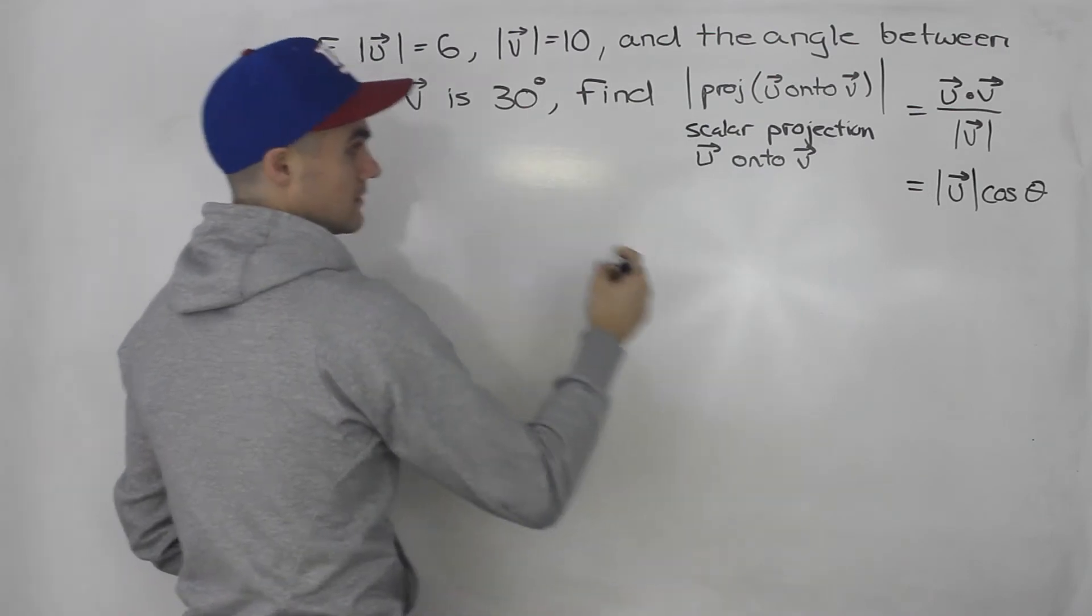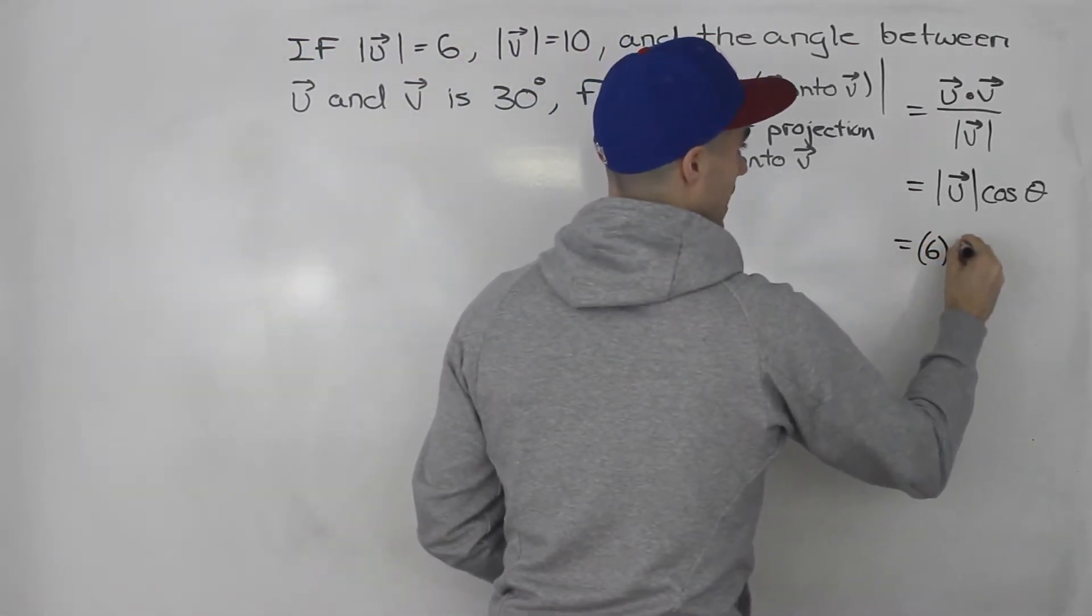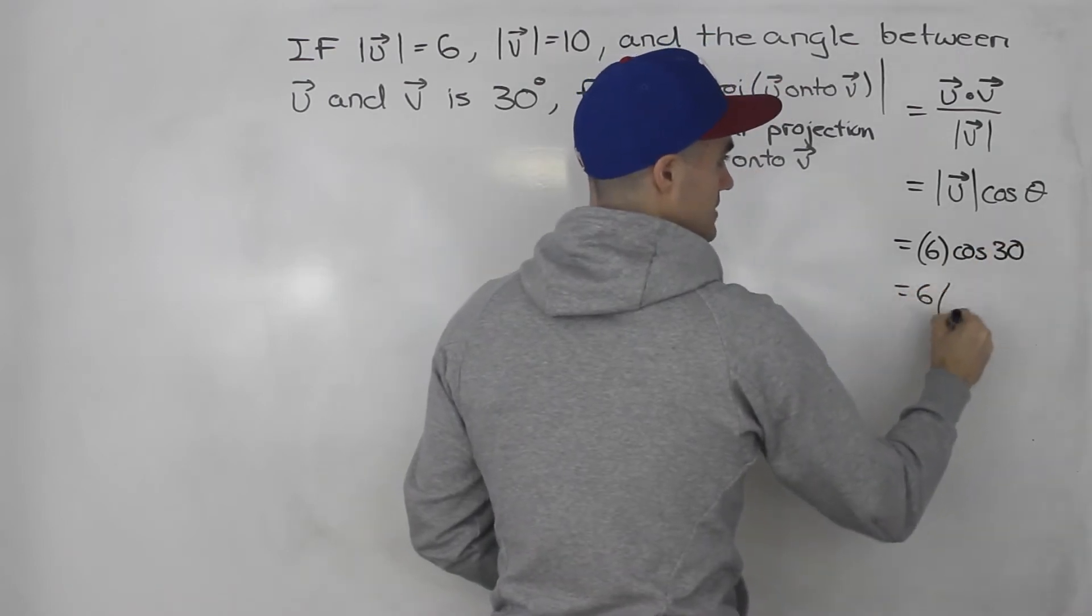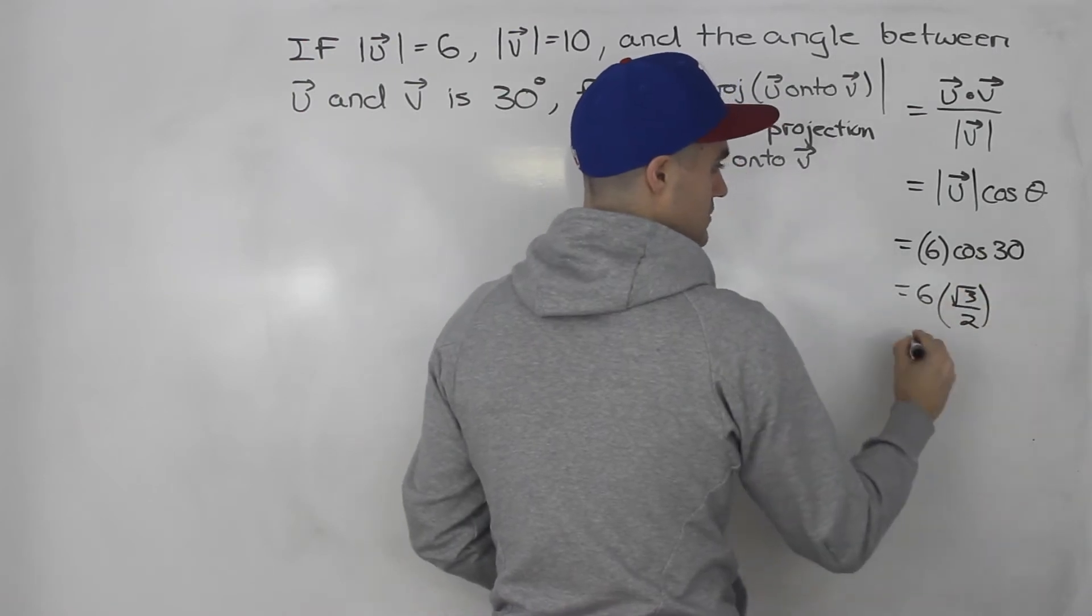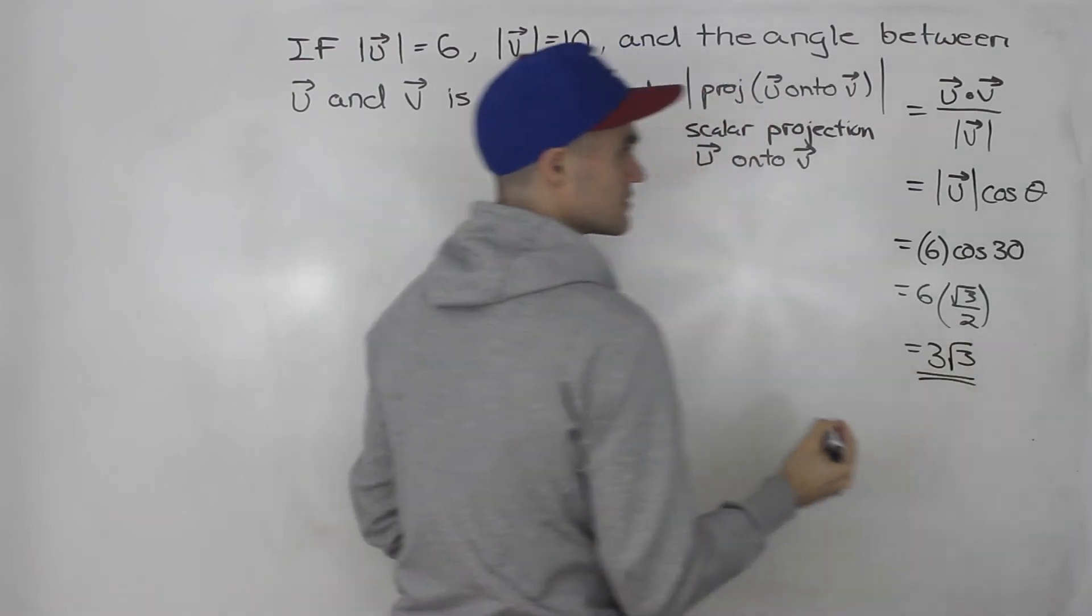So it's simply the magnitude of u, which is 6, times the angle in between them, cos 30. And this is 6 times cos 30 is root 3 over 2. So 6 over 2 is 3. So 3 root 3 is the answer to this question.